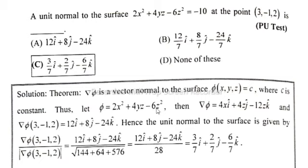So gradient φ = ∂φ/∂x i + ∂φ/∂y j + ∂φ/∂z k. So the value in vector form is 4xi + 4zj - 12zk.